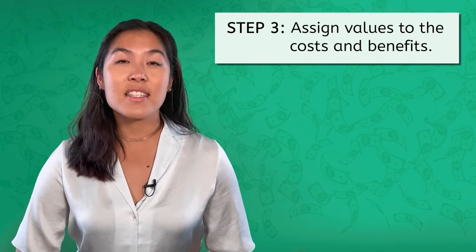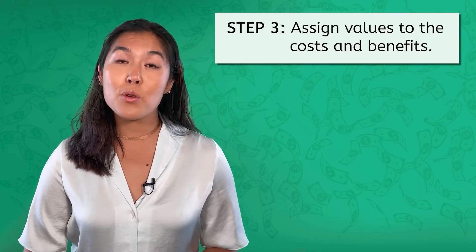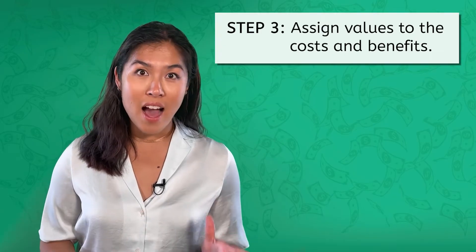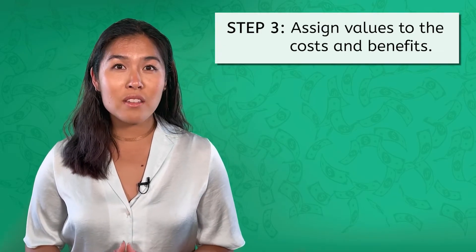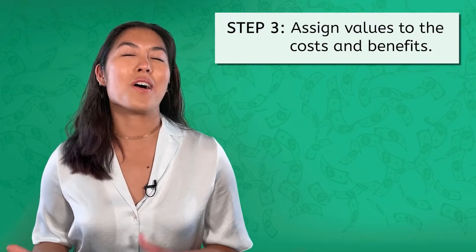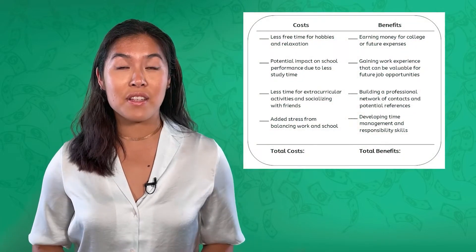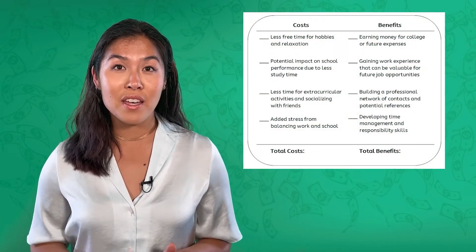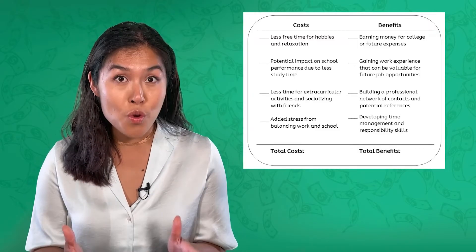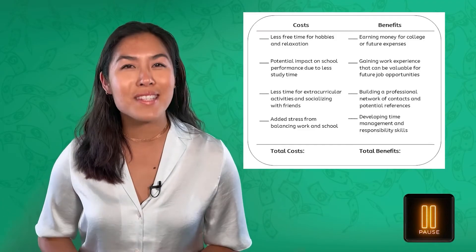Step three: assign values to the costs and benefits. For this step, you can use a scale from 1 to 10, with 1 being low importance and 10 being high importance. Note that you can use whatever rating scale you want — this is just an easy one to try. Now take a minute to go through all the costs and benefits listed in your PDF and put a value on each one based on how much it matters to you personally. Pause the video for a moment and come back when you're all set.